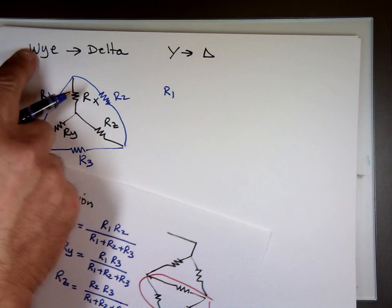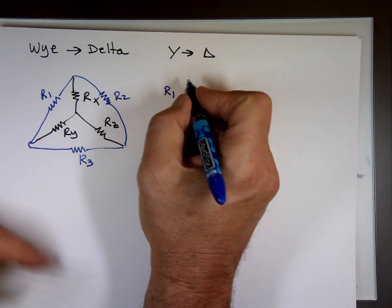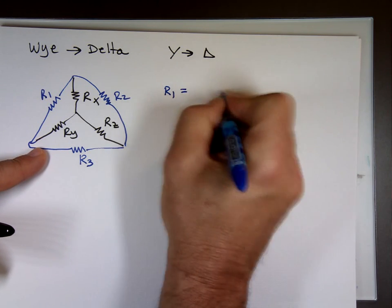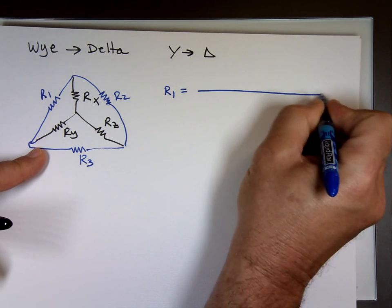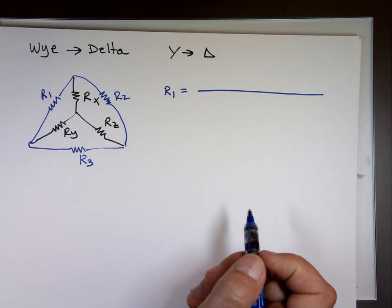The top was changing. When you go from Y to delta is the reverse. The bottom, the top is always the same, but the bottom is changing. So what's the top? The top is going to be, it's a big one.